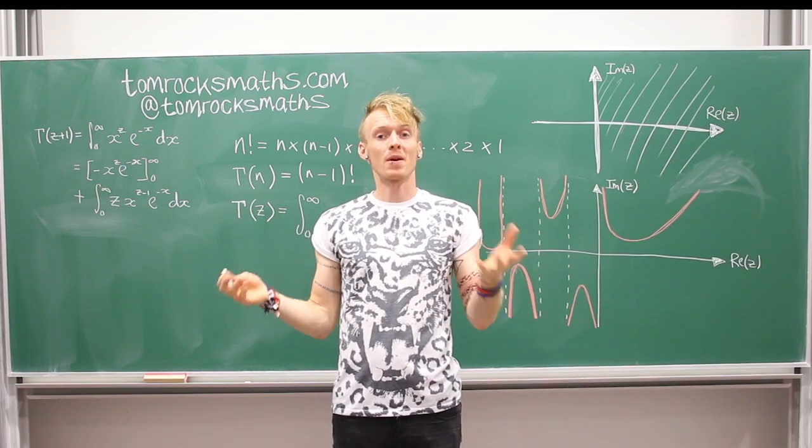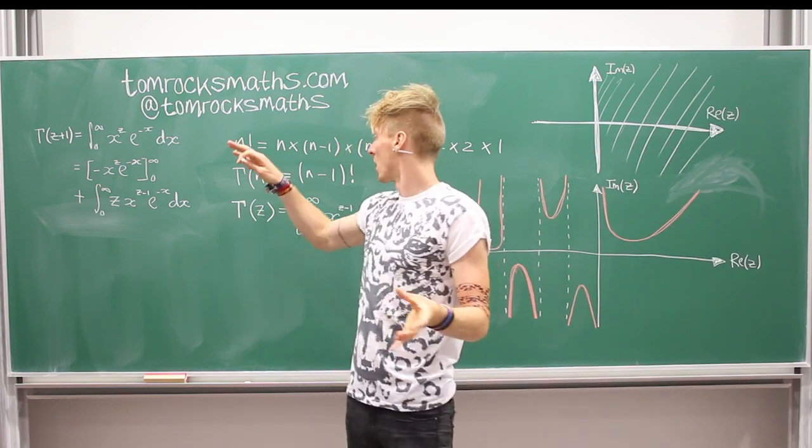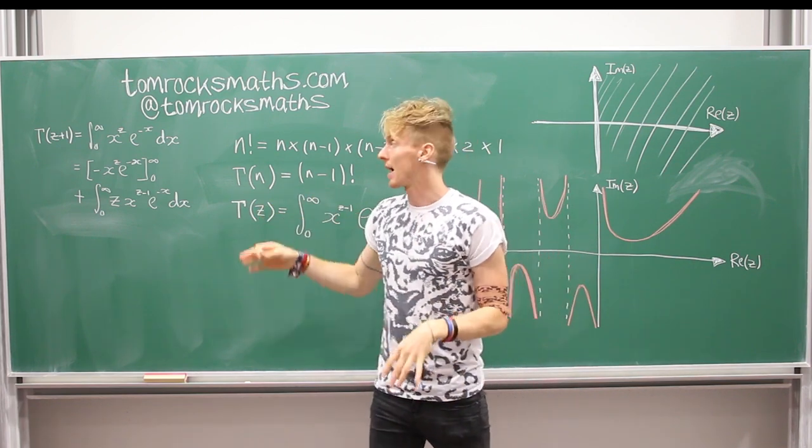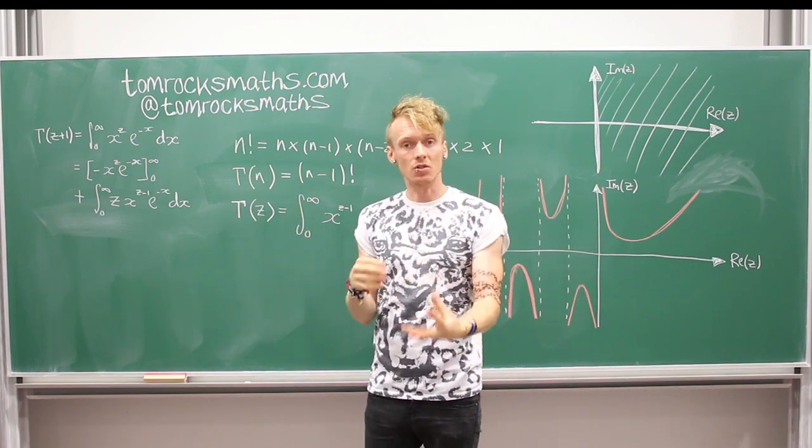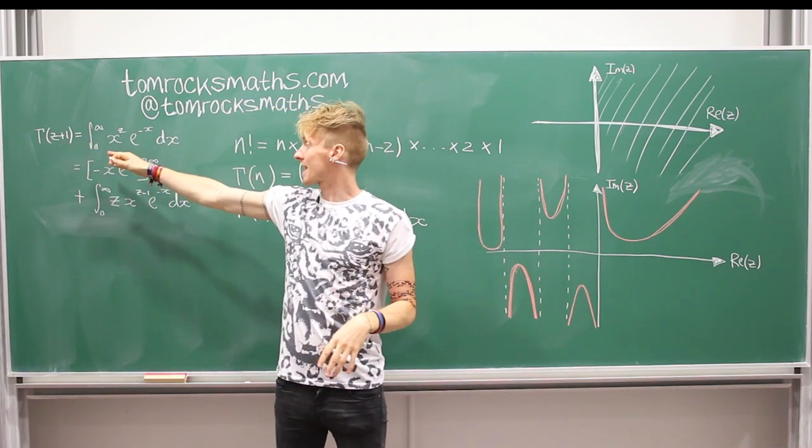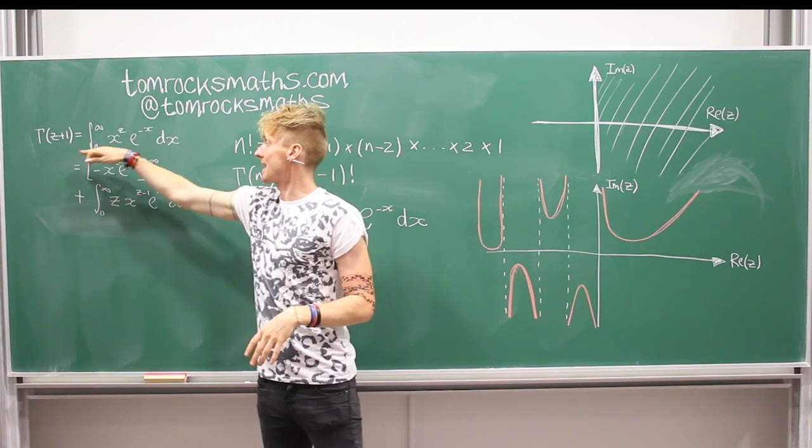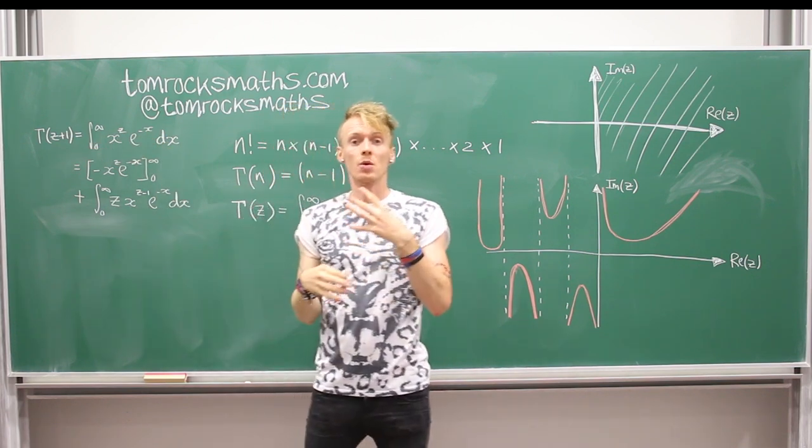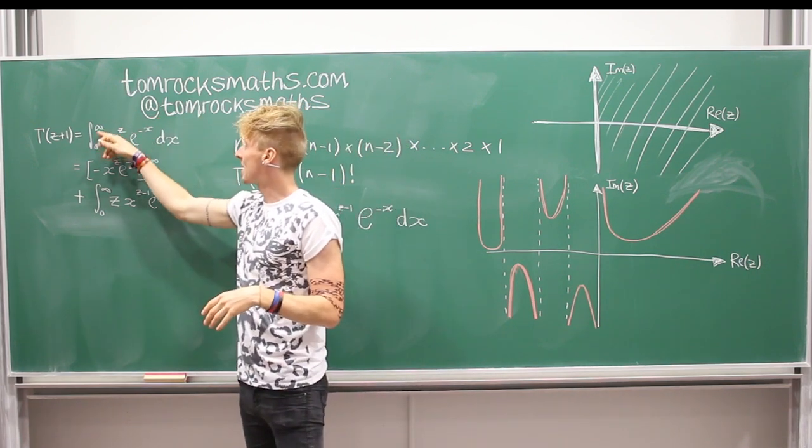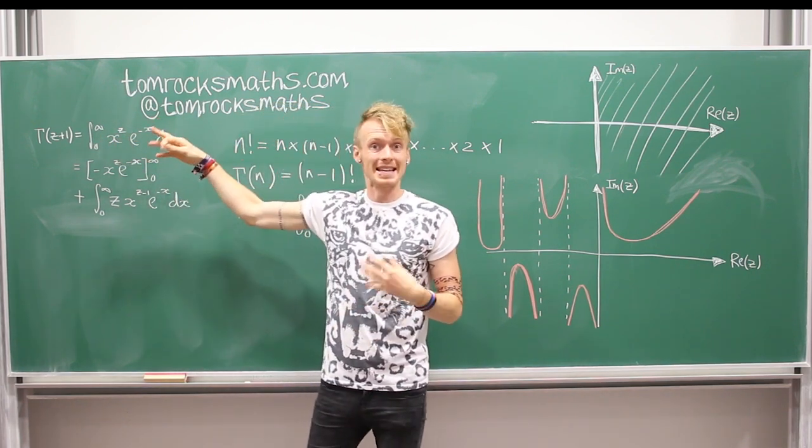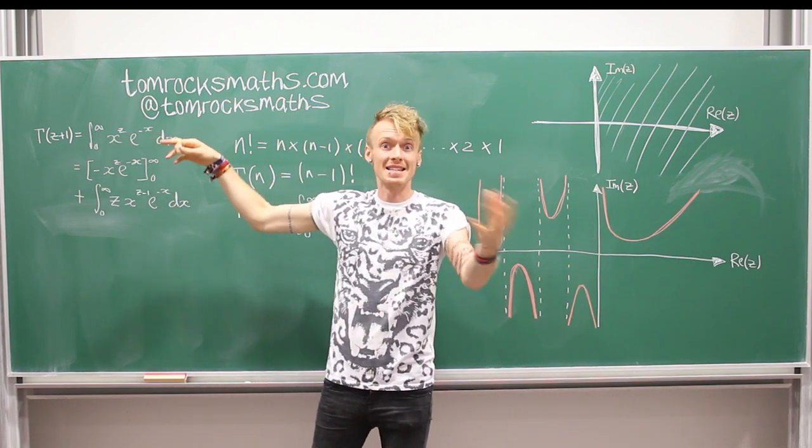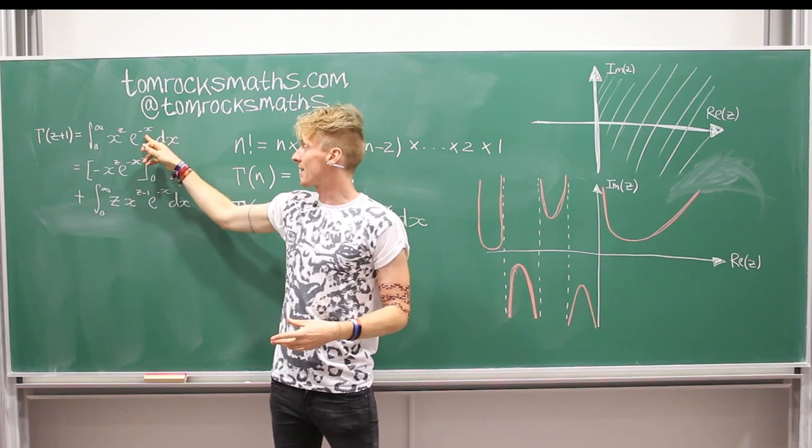So the first step of our proof by induction is to consider gamma of z plus 1. And so writing this out using the integral definition, we have gamma of z plus 1 is x to the z e to the minus x. And we're going to integrate this. And so we want to use integration by parts. So the x to the z term, that one will be easy to differentiate, so we'll call that our u.